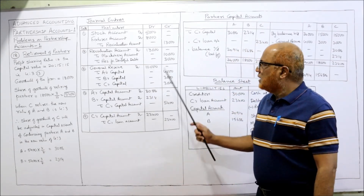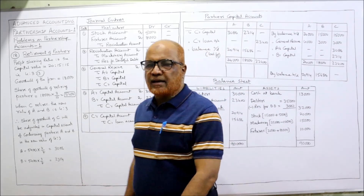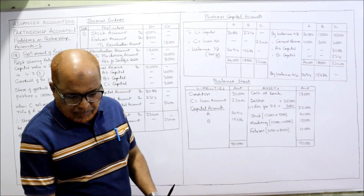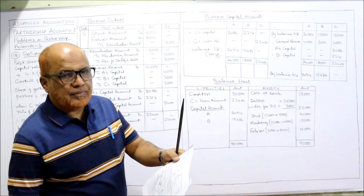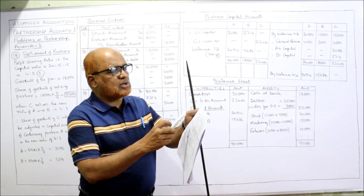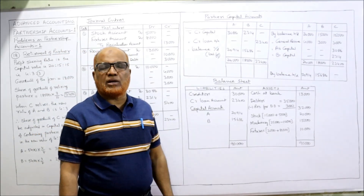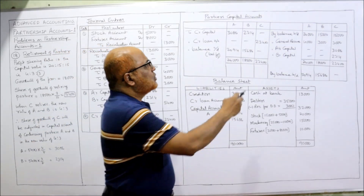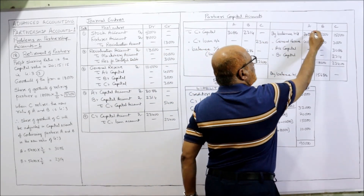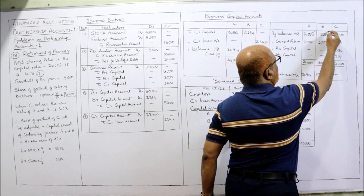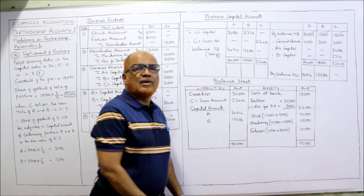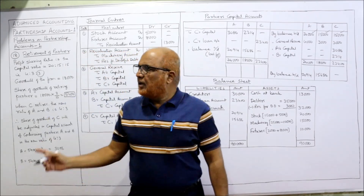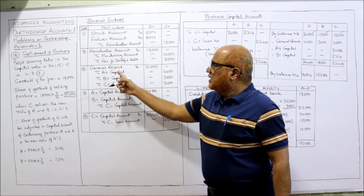Now we come to the capital account. At the time of retirement, capitals of A, B, and C are 20,000, 15,000, and 15,000 respectively — balance brought down. General reserve entries credit A's capital 4,000, B's capital 3,000, C's capital 3,000.